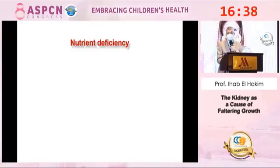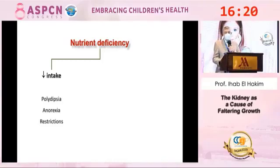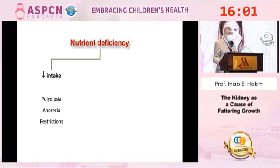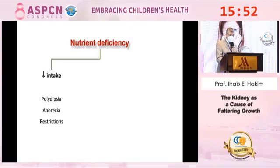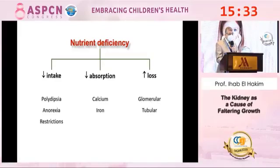Focusing on nutrient deficiency in renal disease, deficiency may result from decreased intake — as in polydipsia secondary to polyuria — where the patient is compelled to drink large amounts of water, leaving no room for nutrition. Anorexia is another problem, as are dietary restrictions we impose on patients. Decreased absorption is another mechanism, with the kidney involved in absorption of calcium and iron. Finally, increased loss — either glomerular or tubular — is the third mechanism.